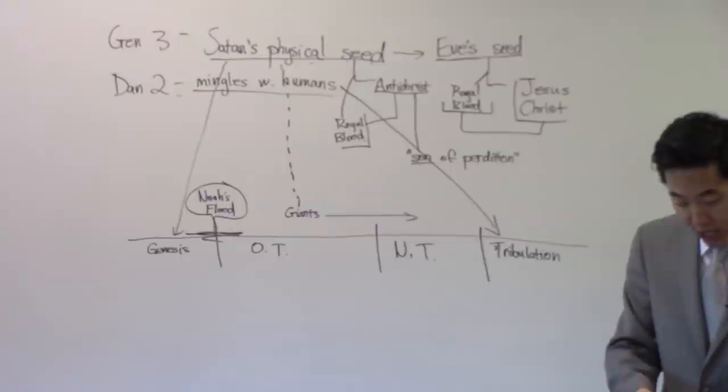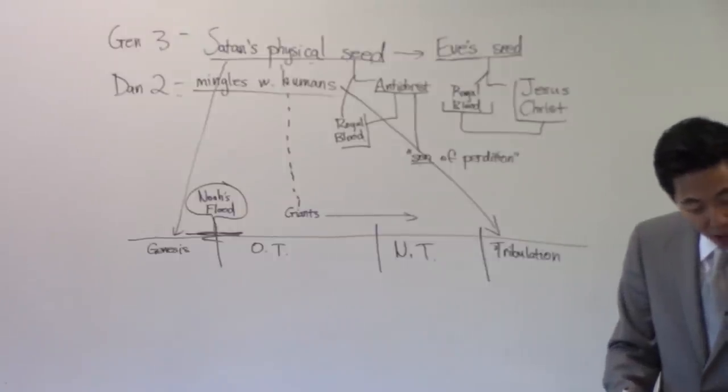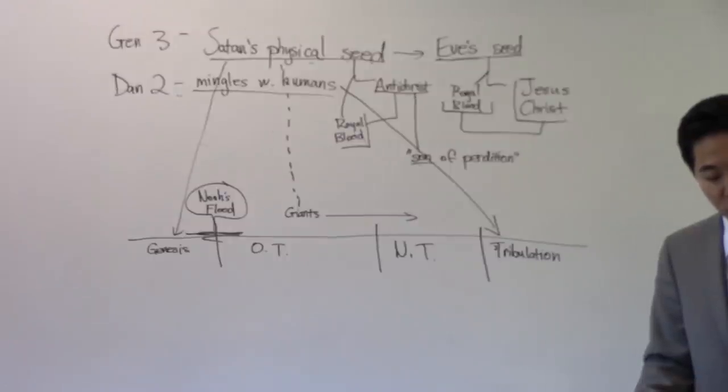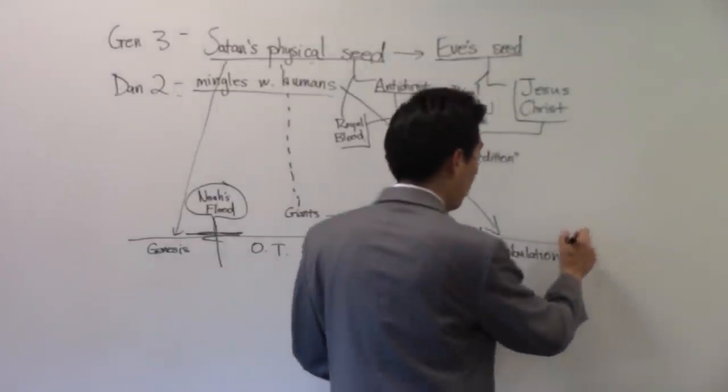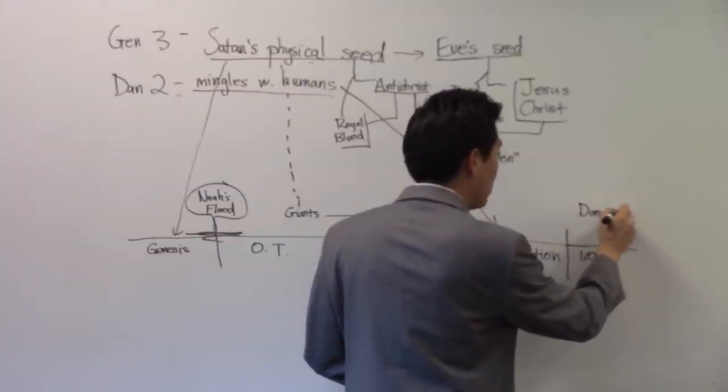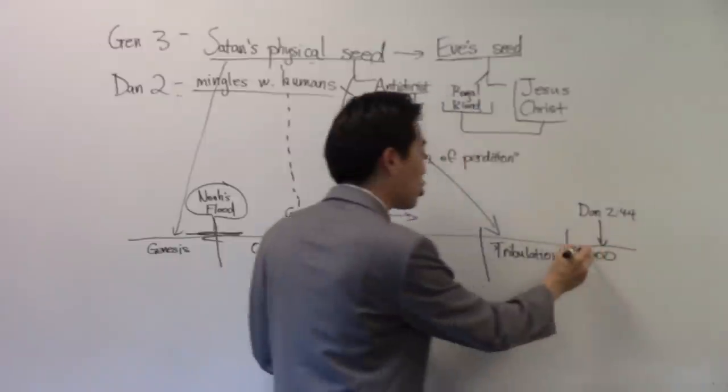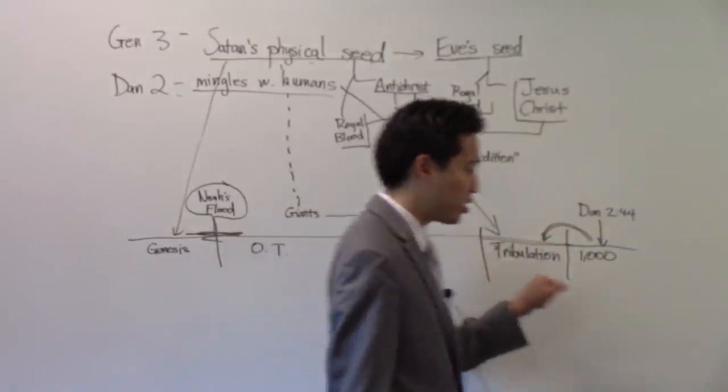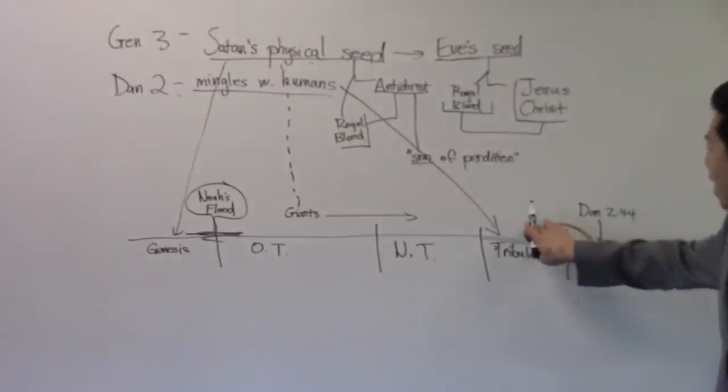Look at Daniel chapter 2, concerning the end times. Verse 44, and in the days of these kings, whoever these kings are, these kings perhaps could be the Illuminati 13 bloodlines, I don't know, but these kings shall, the God of heaven set up a kingdom which shall never be destroyed, and the kingdom shall not be left to other people, but it shall break in pieces and consume all these kingdoms, and it shall stand forever. In Daniel 2:44 we see that this is God's kingdom on earth, the millennial kingdom. God's kingdom conquers this previous kingdom of the devil. What is this devil's kingdom described as then? Let's go backwards.